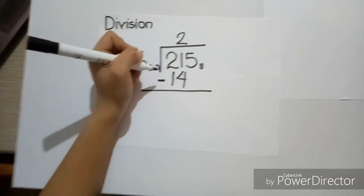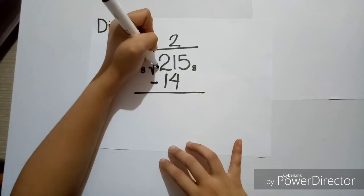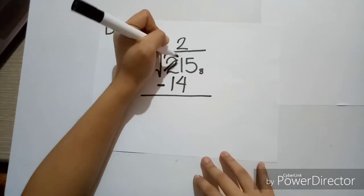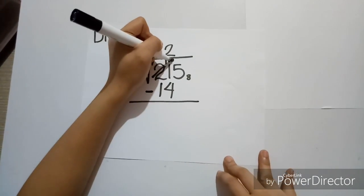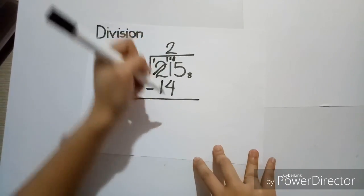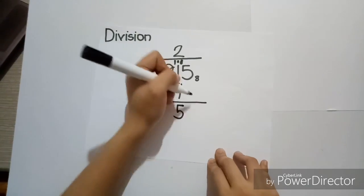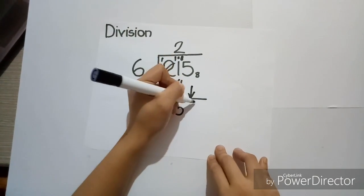Now, subtracting it, we have to borrow from 2. And since 1 is equal to 8, then 9 minus 4 is equal to 5. And 1 minus 1 is equal to 0. So, let's bring the other digit down.